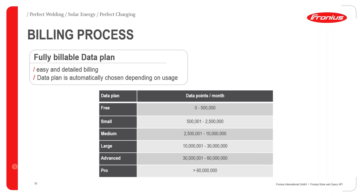Some data is not billed — such as release info and basic PV system info like system ID and system count on SolarWeb. However, billed data includes weather data, any power flow data (e.g., querying current on Phase 1 counts as one data point), and any further detailed PV system information.